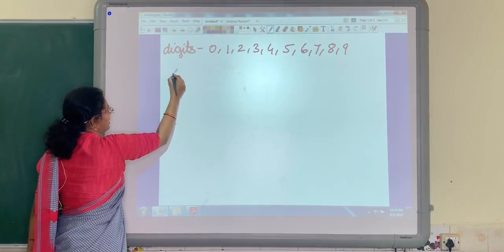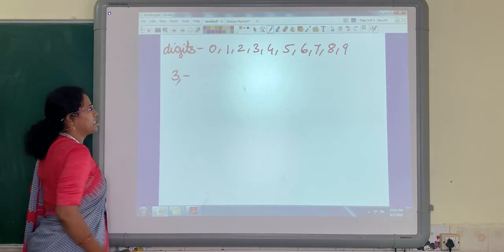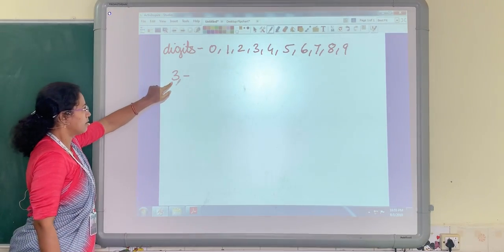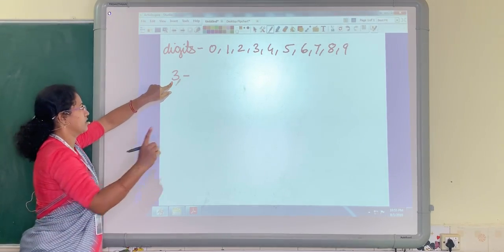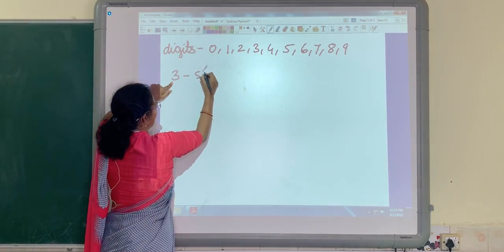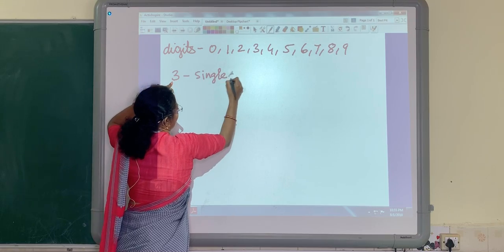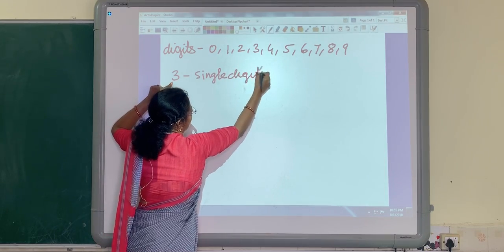Let's say number 3. How many digits are there in this number? Number 3 is made of only one digit. So number 3 is a single digit number.